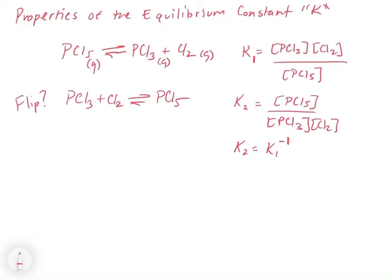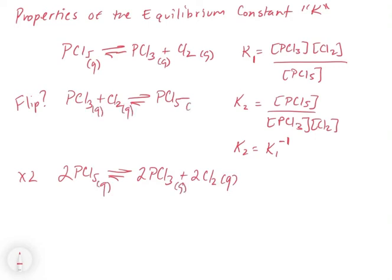Now let's look at what would happen if we were to do this with a factor. So what if we multiplied this thing by two? So let's say that we do two PCL5 is in equilibrium, and we put a two here with two PCL3 plus two CL2, and these are all gases again. Forgive me if I'm forgetting my phase labels. So now let's say that this is K3. So if we were to write what K3 is, it would be PCL3 squared times CL2 squared divided by PCL5 squared.